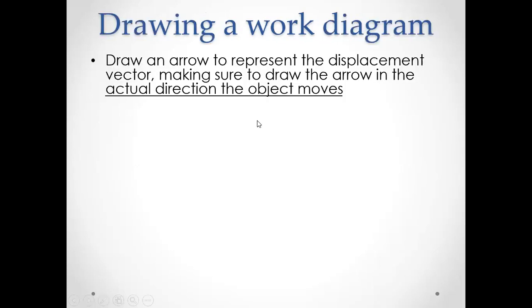Drawing a work diagram. Now, this is not a free body diagram. It's a work diagram. So this is new. And so just take a moment to understand the steps involved. We're going to draw an arrow that represents the displacement vector. And we're going to make sure that we draw the arrow in the actual direction the object's moving. Sometimes people will take an object and they're like, oh yeah, it's on an incline, but I'm just going to draw it like it's moving horizontally.